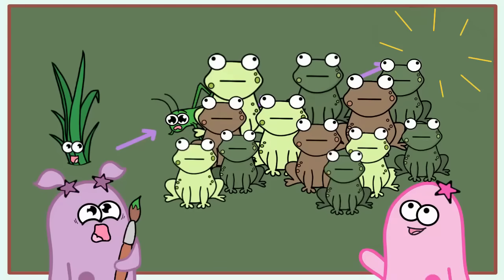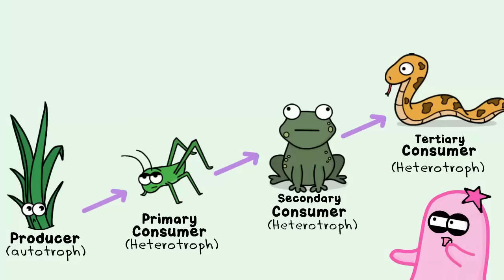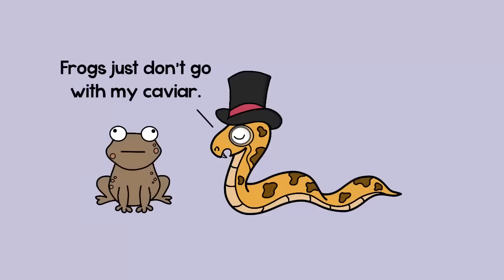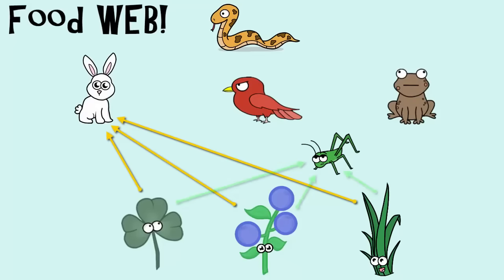And so many frogs that it's possible they wouldn't have enough grasshoppers to even support them. This is actually not a very good model because in real life, this snake probably doesn't just eat frogs — it probably eats rabbits and birds too. Because an ecosystem doesn't typically have a single food chain.